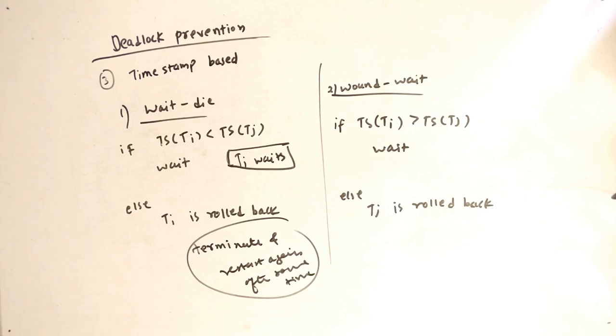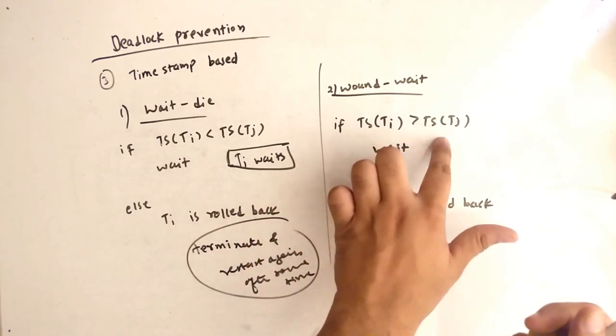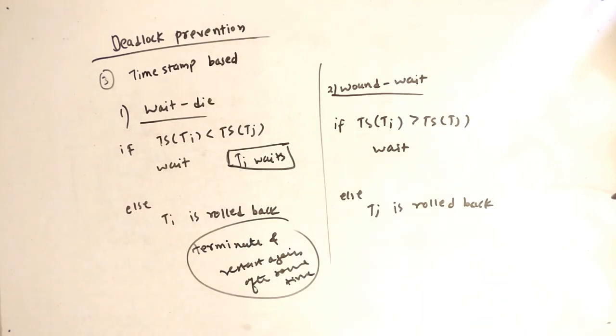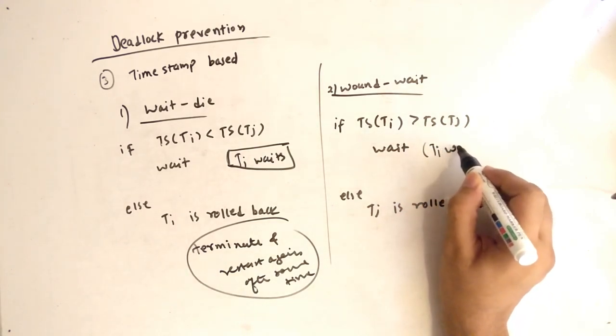So this is the important part. If less then wait. If greater then roll back and restart after some time. But when we talk about wound-wait, it's something different. See if timestamp of Ti is greater than timestamp of Tj then wait. Yes, if it is greater then it waits. Who will wait again? Ti waits.